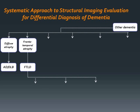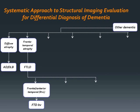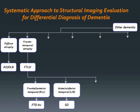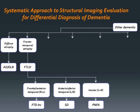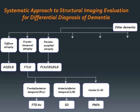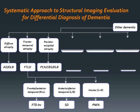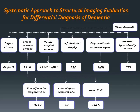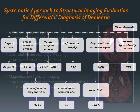Frontotemporal lobar atrophy is indicative of frontotemporal dementia. If the frontotemporal lobar atrophy has a right predilection, behavioral variant is indicated, whereas a left predilection indicates semantic dementia. Periinsular atrophy with a left predilection, or less commonly with a right predilection, indicates progressive nonfluent aphasia. Alternatively, parietoccipital atrophy is associated with neurodegenerative diseases such as posterior cortical atrophy, cortical basal degeneration, or dementia with Lewy bodies.